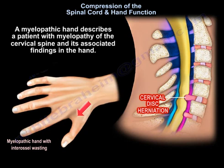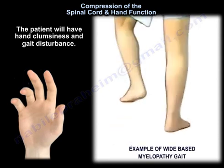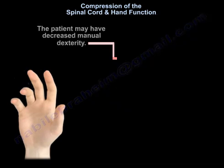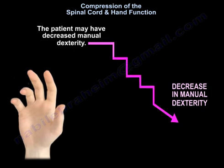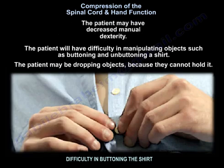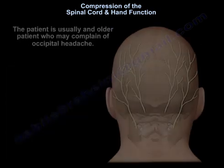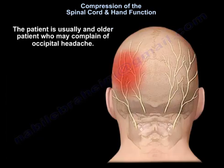A myelopathic hand describes a patient with myelopathy of the cervical spine and its associated findings in the hand. The patient will have hand clumsiness and gait disturbance, increased manual dexterity difficulty in manipulating objects, buttoning and unbuttoning a shirt, and the patient may be dropping objects because they can't hold them. The patient is usually an older patient that may complain of occipital headache.